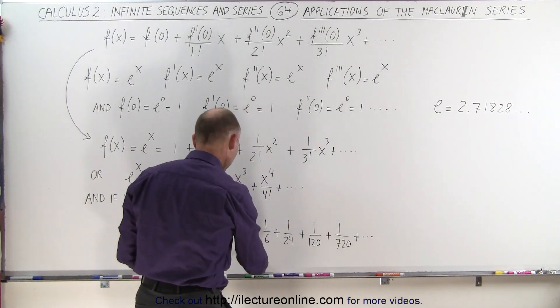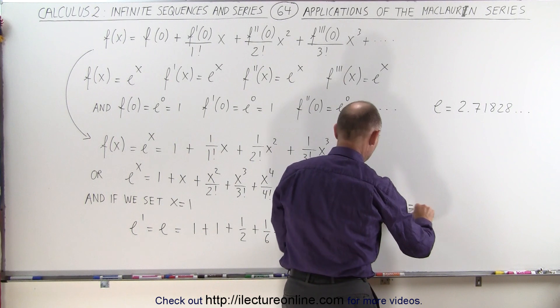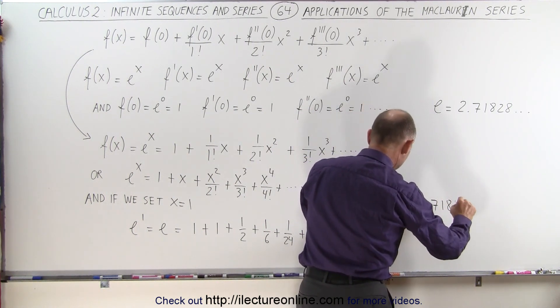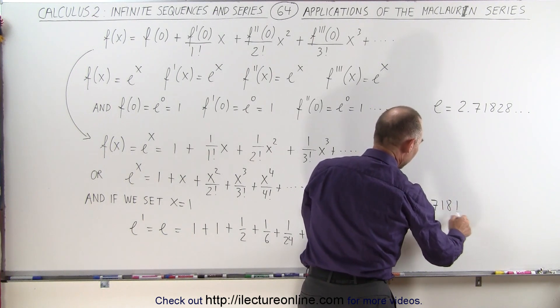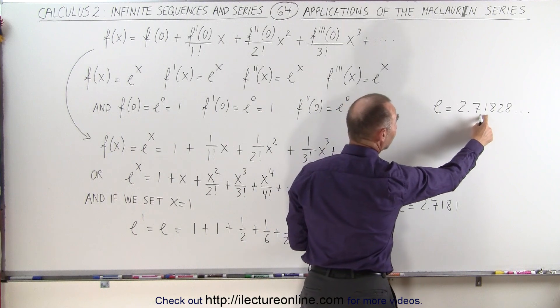And for the first seven terms, we get e is equal to 2.718 and almost 1 if I want to get it to one more decimal place. So notice that we have 2.71828, so at least we have it correct to the first three decimal places just using the first seven terms of the infinite series.